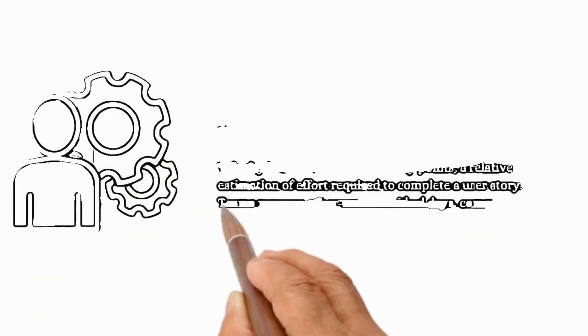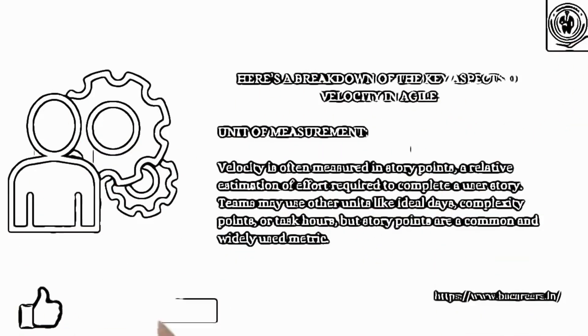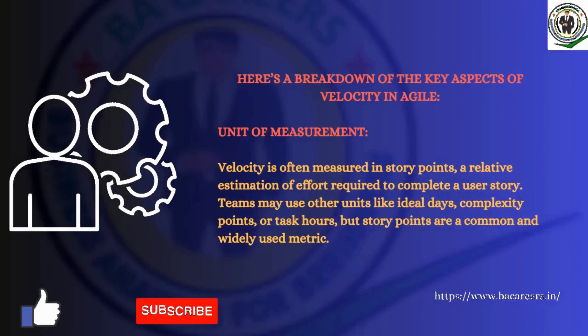Here is a breakdown of the key aspects of Velocity in Agile. Unit of Measurement: Velocity is often measured in story points, a relative estimation of effort required to complete a user story. Teams may use other units like ideal days, complexity points, or task hours, but story points are a common and widely used metric.